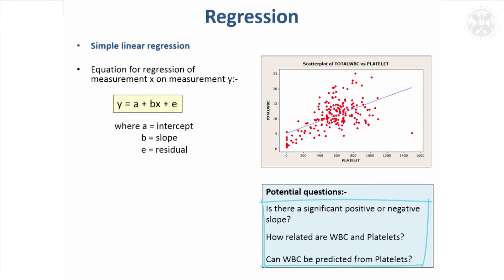Regression can be used to answer a few different questions. You might want to simply ask: is there a significant positive or negative slope? That's really asking whether you have significant correlation between your two values, and it will come up with a p-value to test that hypothesis. It also quantifies how related white blood cell counts and platelets are, giving you the slope and the correlation coefficient.